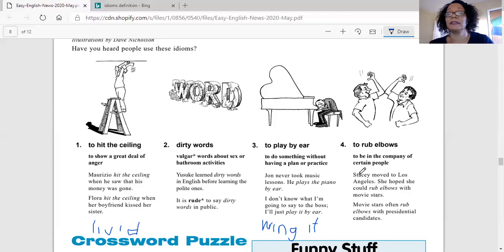The examples they give, Stacy moved to Los Angeles. She hoped she could rub elbows with movie stars. She moved to Los Angeles and hoped she could rub elbows with movie stars. Does she want to go up to them and start doing this to them? No, she probably might get in trouble if she did that, but it just means she'd like to meet them, talk to them, get to know them and share information with them.